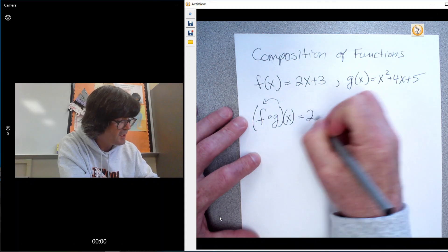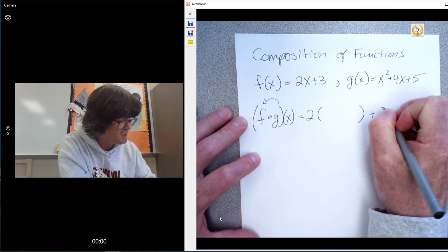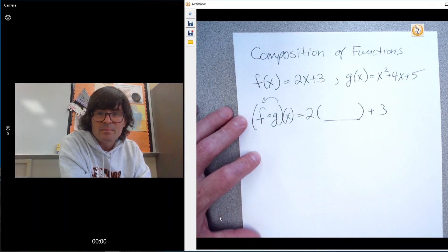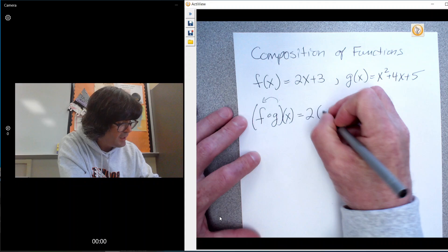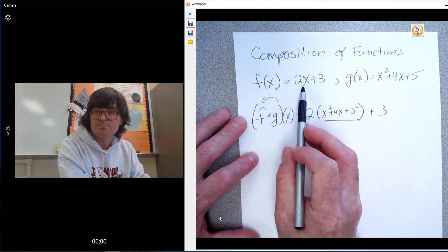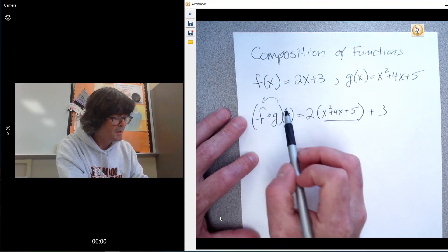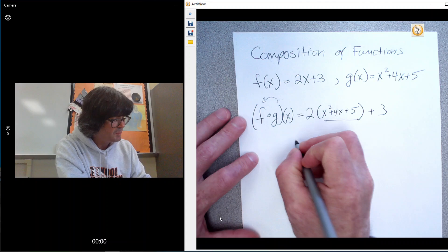Currently, function f is 2 times something plus 3. I'll just put a blank there. And so if you put g into f, you just put x squared plus 4x plus 5, where there used to just be an x. And then you can multiply it out.